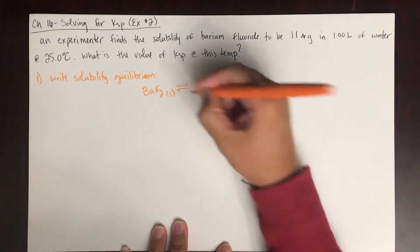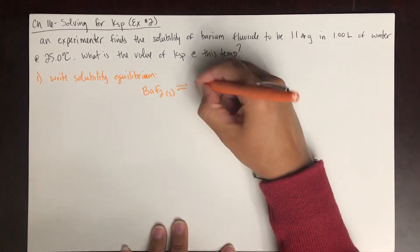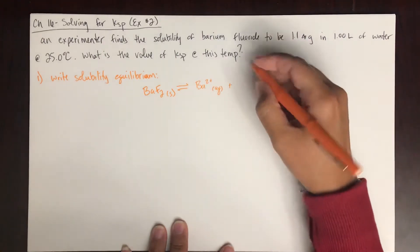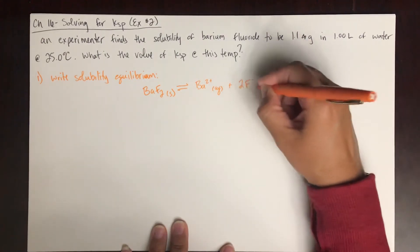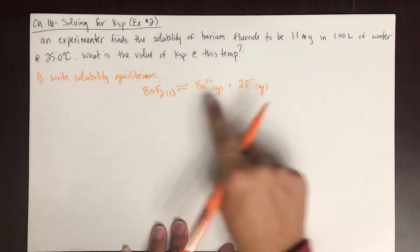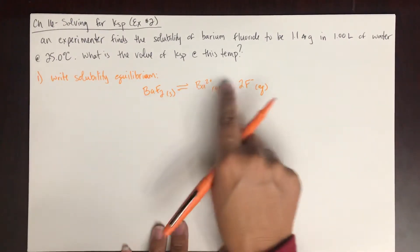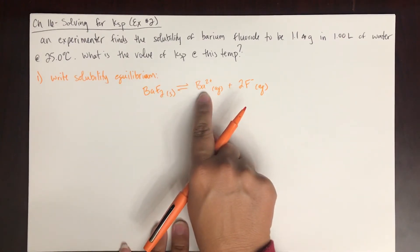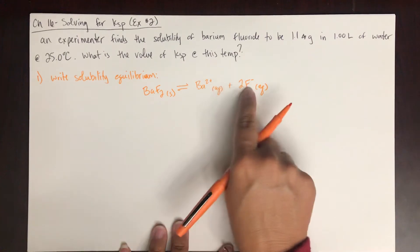So it is in equilibrium with barium 2 plus aqueous plus 2 fluoride ions. Don't forget the stoichiometry here. For every 1 mole of barium fluoride that breaks apart, it's going to produce 1 mole of barium 2 plus ions and 2 moles of fluoride ions.